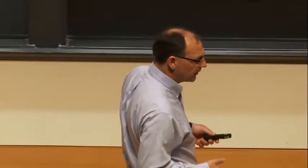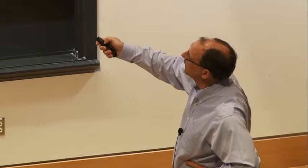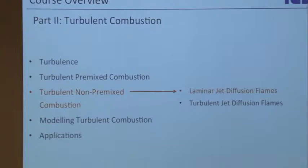One thing that might be interesting here is the flame length of non-premixed flames. What happens if you change the Reynolds number — i.e., increase the flow velocity? What happens to the flame length?